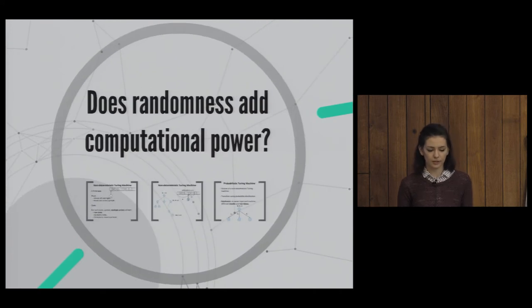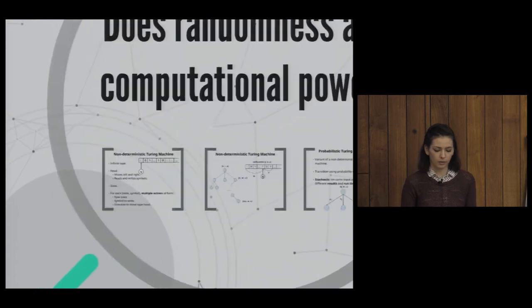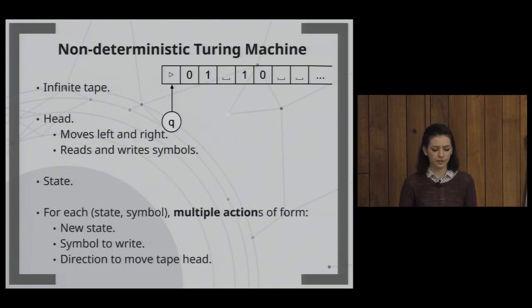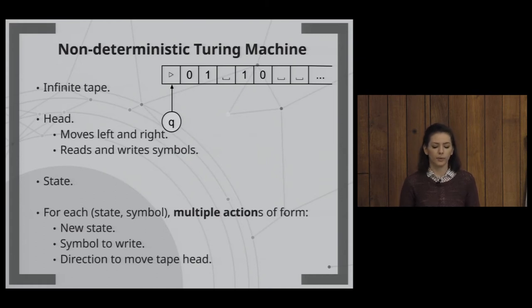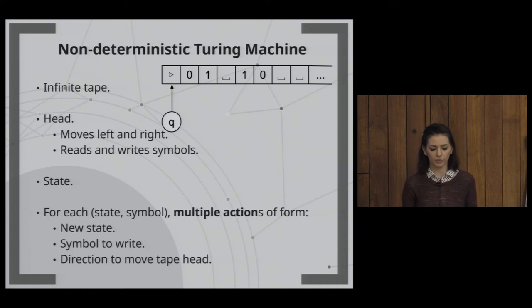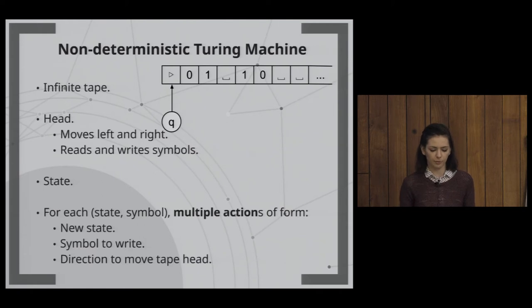Now back to our main question: does randomness have computational power? To reason about randomness we need to define it formally. Let's look at the definition of a non-deterministic Turing machine. I will give the informal definition since we only need the intuition.